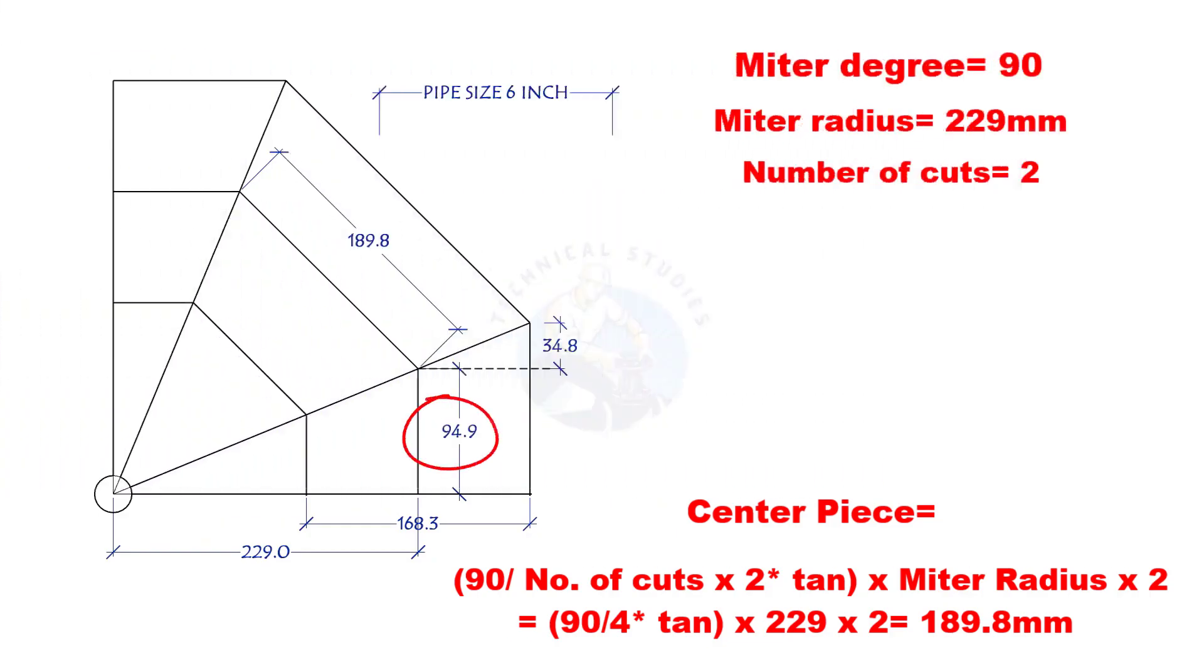The end piece length is 94.9 mm. Let us mark it on a pipe.